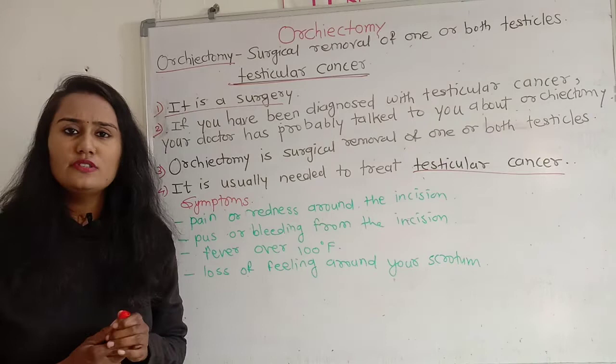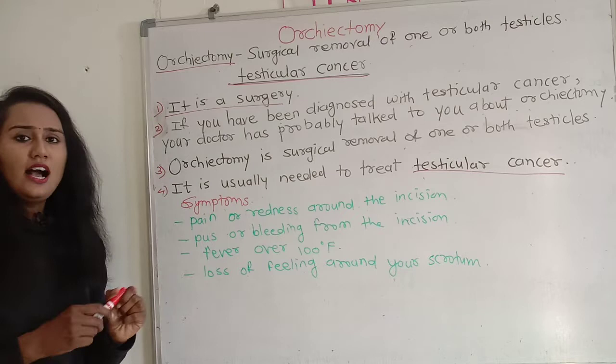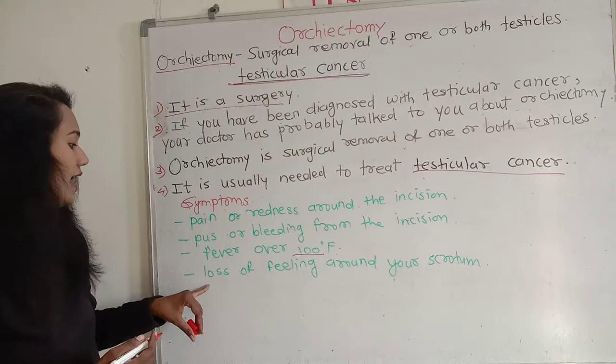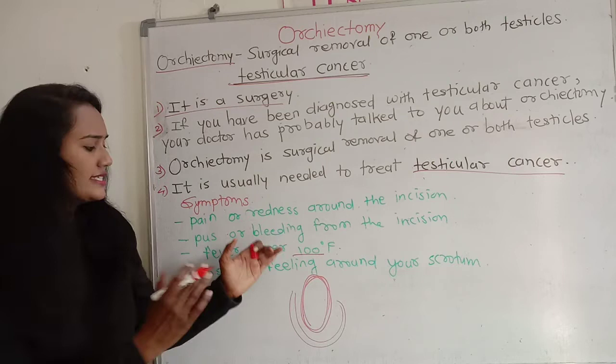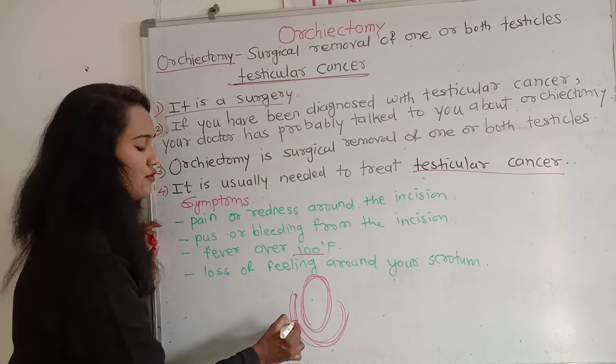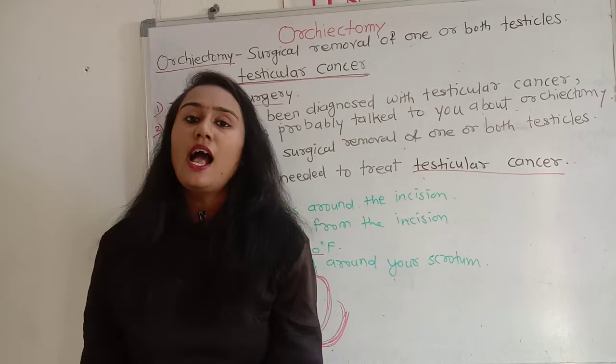Under the Orchiectomy condition, you will see symptoms such as pain and redness around the incision, pus, bleeding, and fever of 100 degrees Fahrenheit or higher. There may also be loss of feeling around your scrotum — the scrotum is the sac-like structure that encloses and protects the testes.